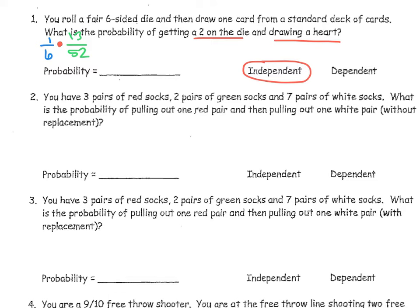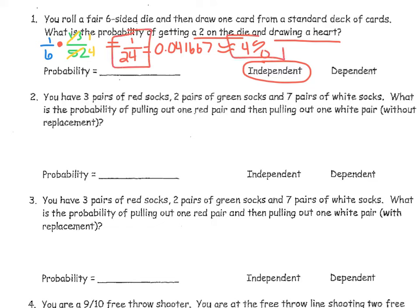Before multiplying, I'll simplify. 13 and 52 are both divisible by 13, so 13/52 simplifies to 1/4. Nothing else simplifies, so when I multiply straight across: 1 times 1 is 1, and 6 times 4 is 24. The probability of this event happening is 1 out of 24. When you divide, you get approximately 0.0417, which is approximately 4%. So the probability is 1 out of 24, or a 4% chance.